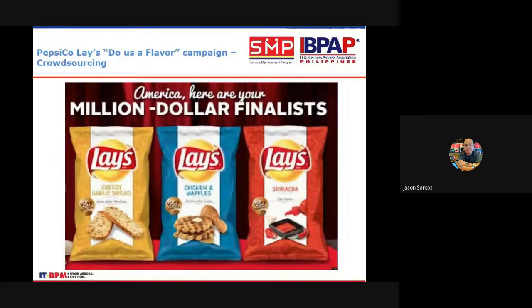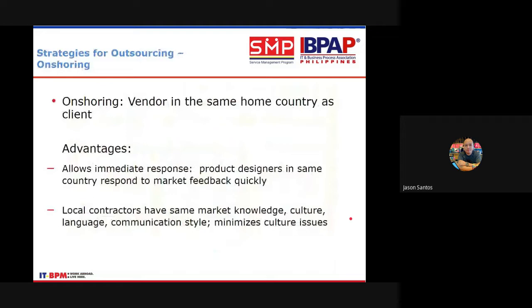There are always advantages and disadvantages in any activity. When Lays did the 'Do Us a Flavor' campaign, it was successful. They offered three new flavors — chicken and waffles, cheesy garlic bread — based on what people wanted. That is a form of crowdsourcing: they made a campaign, and cumulatively built the flavors from what the crowd suggested, then launched them as products.